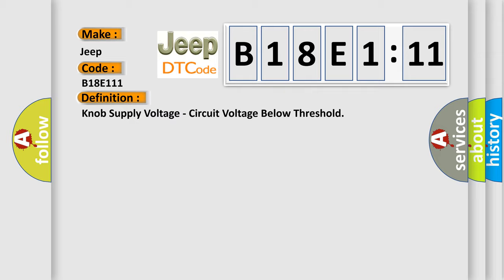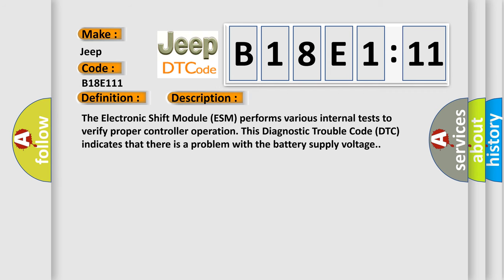And now this is a short description of this DTC code. The Electronic Shift Module (ESM) performs various internal tests to verify proper controller operation. This diagnostic trouble code (DTC) indicates that there is a problem with the battery supply voltage.